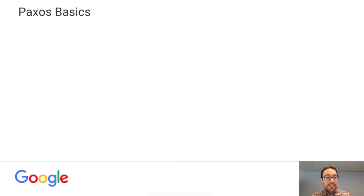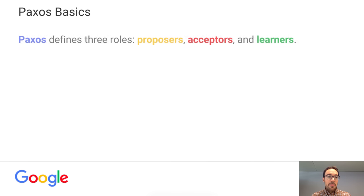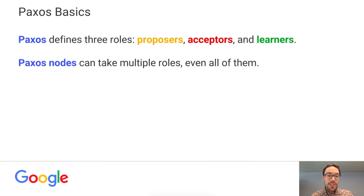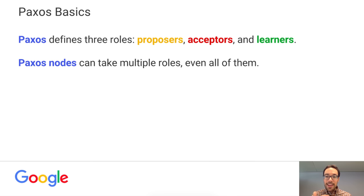Let's move on to some Paxos basics. Paxos defines three roles: proposers, who propose values to reach consensus on; acceptors, who contribute to reaching the consensus itself; and learners, who learn the agreed-upon value and can be later queried for what the consensus value was. In practice, Paxos nodes can take multiple roles, even all of them. So a single node, a single server, can send proposals to other nodes, contribute to reaching consensus, and learn the final agreed-upon value so that you can query them for it later.